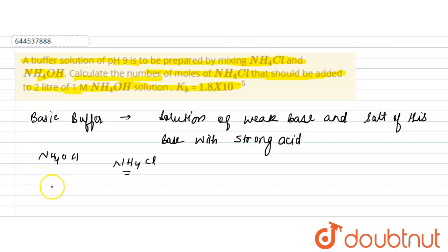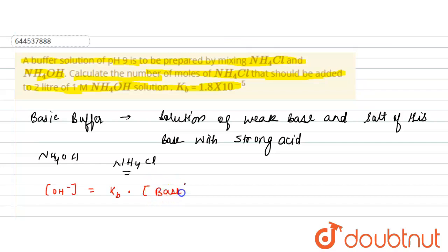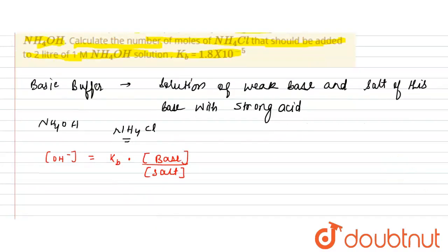In the case of a basic buffer, the equation is: [OH⁻] = Kb × (concentration of base) / (concentration of salt). Let's say the number of moles of NH4Cl is A.